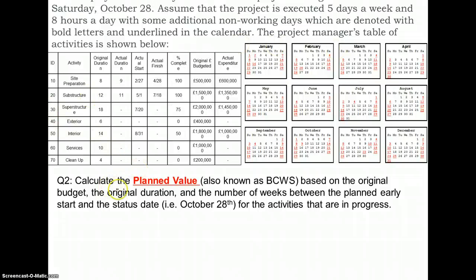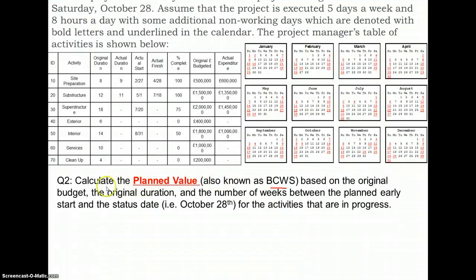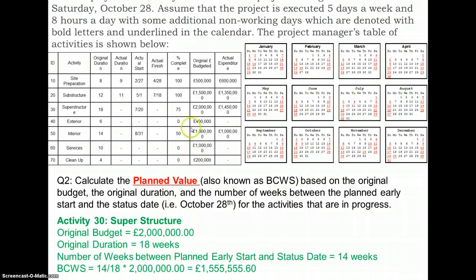Now let's move on to the next question: calculate the planned value, also referred to as the budgeted cost of work scheduled (BCWS), based on the original budget, original duration, and the number of weeks between the planned early start date and the status date. We have to see how much money we should have spent by the reporting date, October 28th. Looking at the superstructure activity, the original budget for this job was two million pounds.